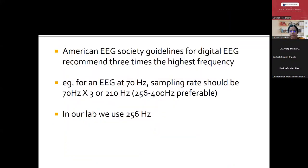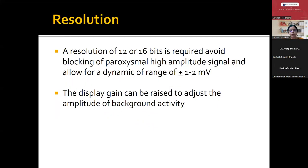The American EEG Society guidelines suggest that for an EEG recorded at 70 hertz frequency, the sampling rate should be three times the highest frequency — around 210 hertz. But in most digital machines nowadays, the sampling rate is around 256 hertz, which is reasonably good because the highest frequency we are recording is 70 hertz. But with continuous EEG recordings, the sampling rate used is very high — almost up to 1000 hertz. The resolution of the monitor should be around 12 to 16 bits to avoid blocking of paroxysmally high amplitude signals.